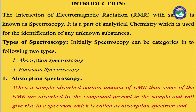In emission spectroscopy, when electromagnetic radiation is applied to a sample, the sample absorbs a certain amount of radiation and emits the remaining. The spectrum obtained at the time of emission is called the emission spectrum, and such type of spectroscopy is known as emission spectroscopy. So there are two types of spectroscopy — absorption and emission — and that is the primary classification. Every spectroscopy is based on either absorption or emission.